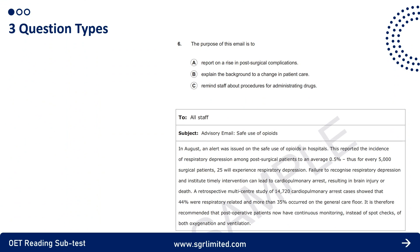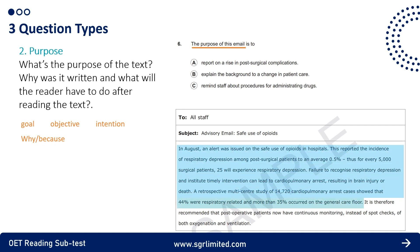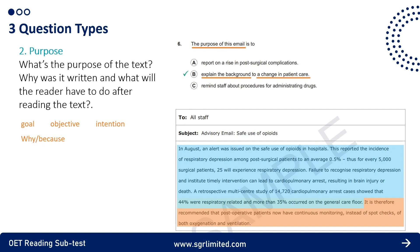A Purpose question requires you to choose the answer that best explains why the text was written. Typical words signifying a Purpose question include synonyms of purpose such as goal, aim, objective, and intention, as well as the question word 'why' and the word 'because.' In this example, the first few sentences give background information about opioids, and the last sentence recommends a change. The correct answer is B because it explains the background from the first sentences and also discusses the change in patient care.